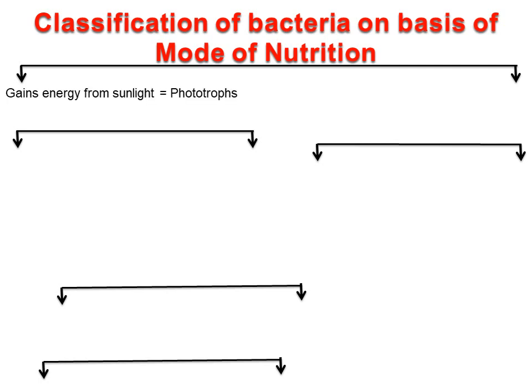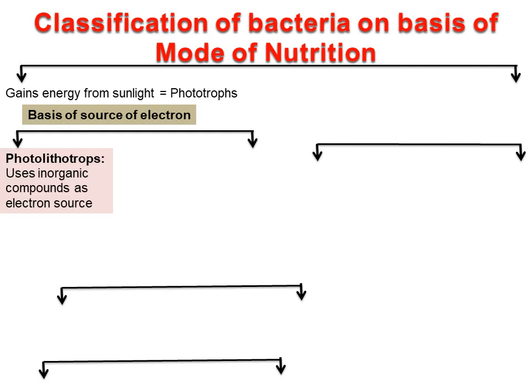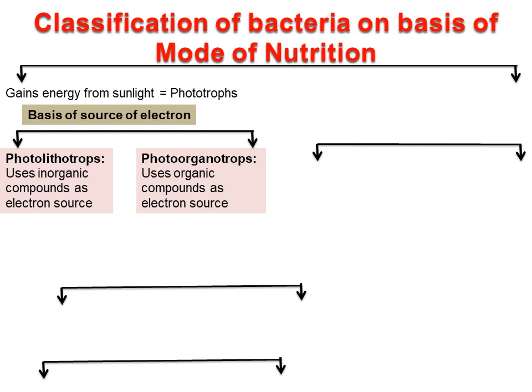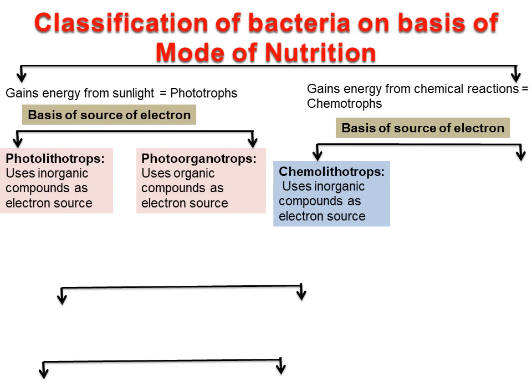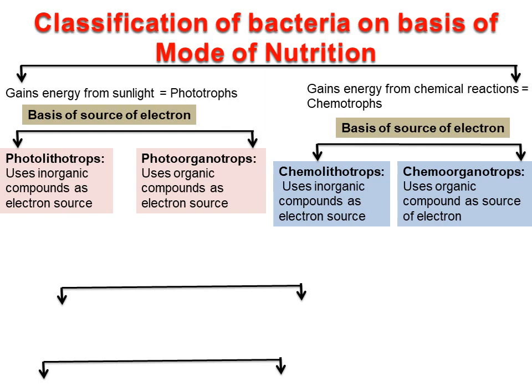Classification of bacteria on the basis of mode of nutrition: those bacteria which gain energy from sunlight are known as phototrophs. On the basis of source of electron, phototrophs are divided into two groups: phototrophic bacteria which use inorganic compounds as electron source are called photolithotrophs; phototrophic bacteria which use organic compounds as electron source are called photoorganotrophs. Those bacteria which gain energy from chemical reactions are called chemotrophs — they cannot carry out photosynthesis. Chemotrophs are further divided into two groups: chemotrophic bacteria using inorganic compounds as electron source are called chemolithotrophs; chemotrophic bacteria using organic compounds as electron source are called chemo-organotrophs.